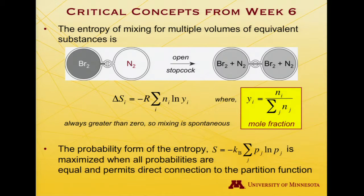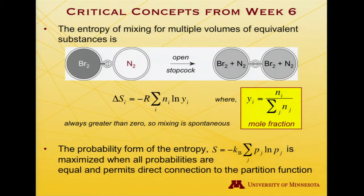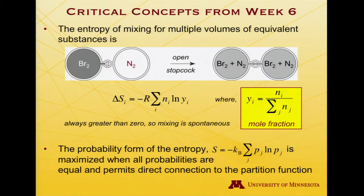Yet another form of entropy we looked at was the probability form, which says that the entropy is equal to minus Boltzmann's constant times the sum over different states of the probability of a state times the log of the probability of being in that state. That function is maximized when all the probabilities are equal, and moreover, by invoking probability, it provides a direct connection to the partition function.